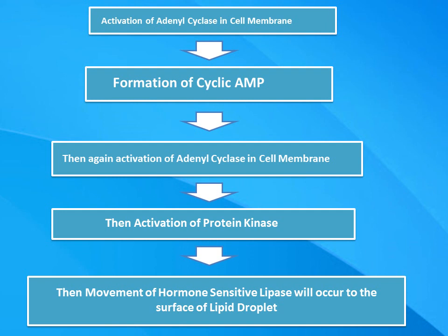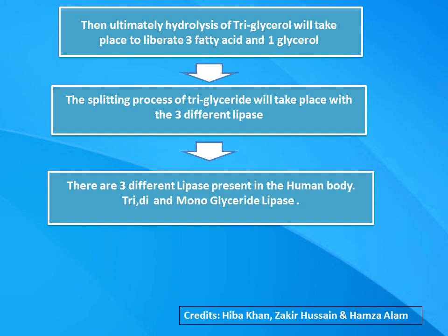The sequence of action is: first, activation of adenyl cyclase in the cell membrane; then formation of cyclic AMP; then activation of protein kinase; then movement of hormone-sensitive lipase to the surface of the lipid droplet; and ultimately hydrolysis of triglyceride takes place to liberate three fatty acids and one glycerol.